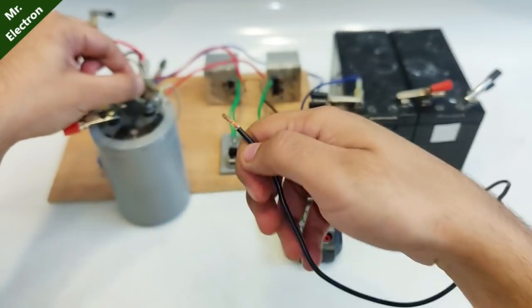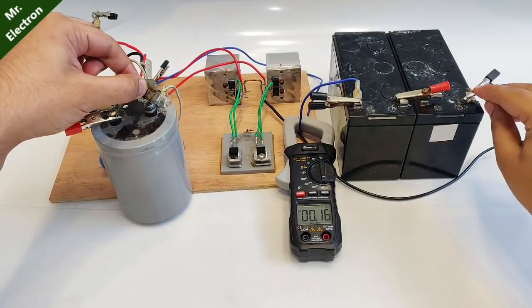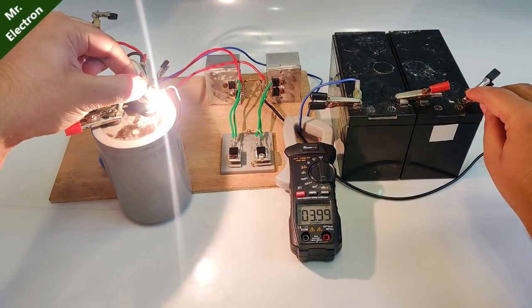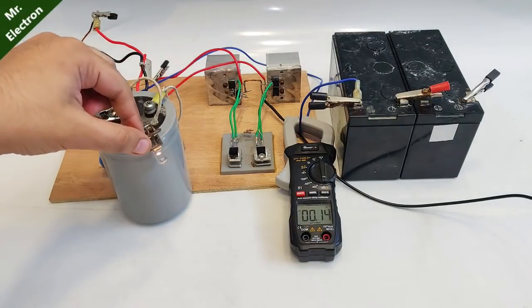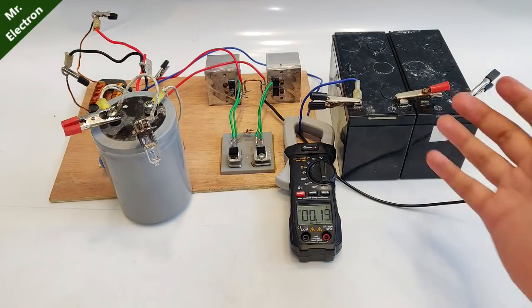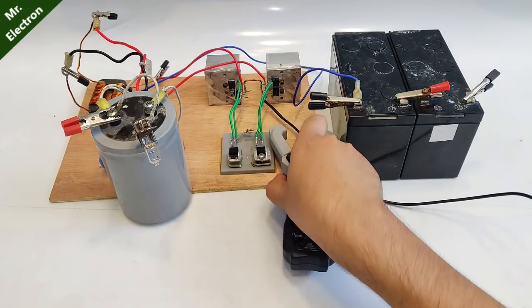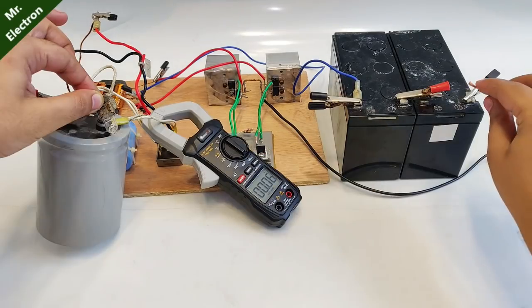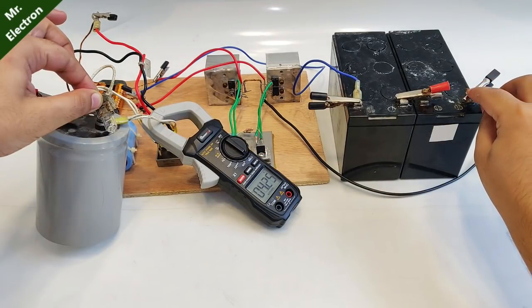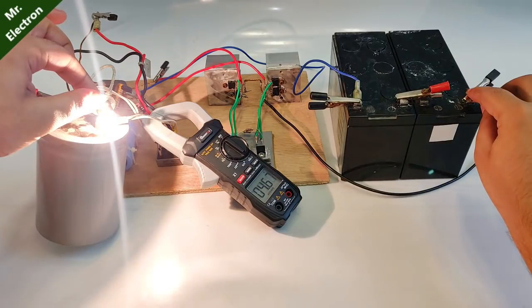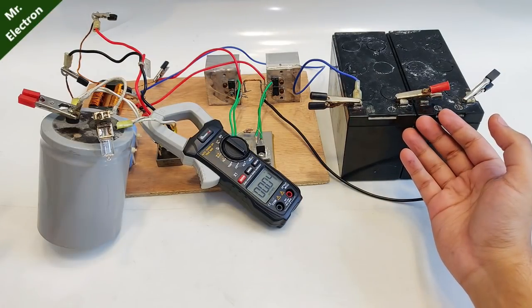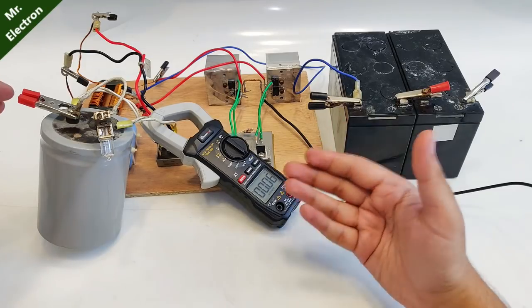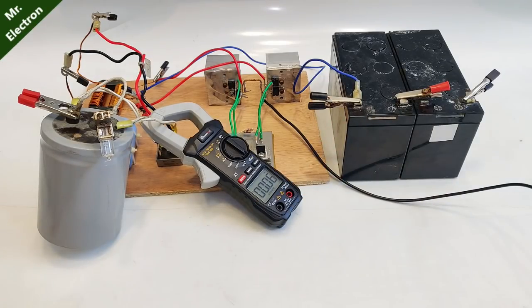Now let's measure the current when I've connected the car headlamp bulb. 3.90 amperes drawn from the battery. Let's first measure the output current. Keep watching the display screen: 4.67 amperes. 3.90 is being consumed from the battery and the output is around 4.70 amperes.